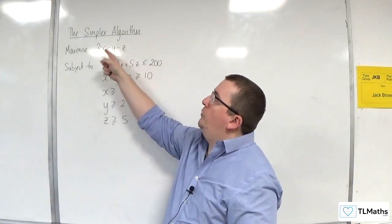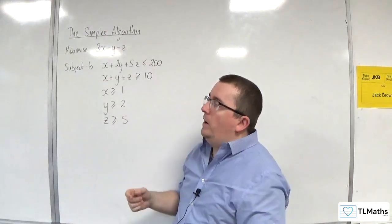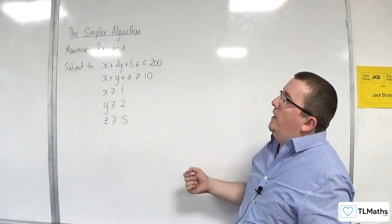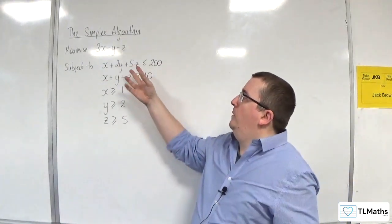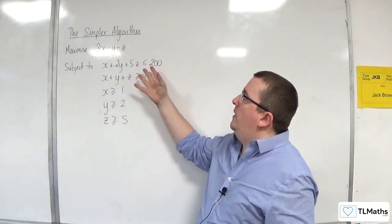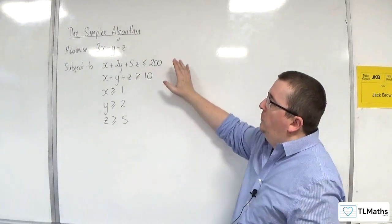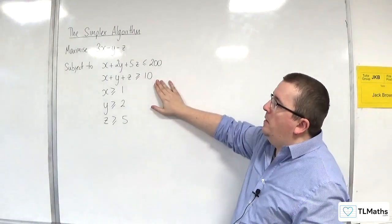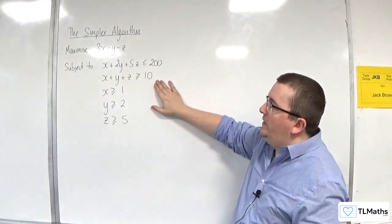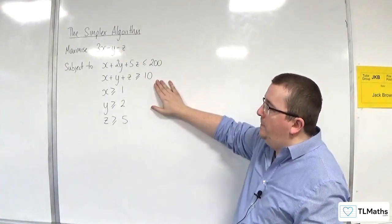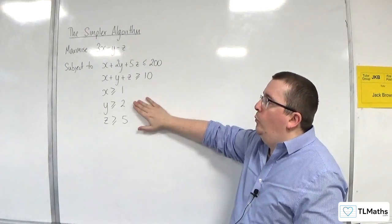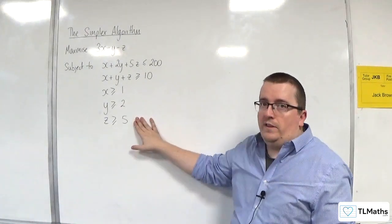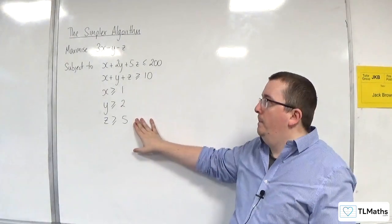We're going to maximise 3x take away y take away z, subject to: x plus 2y plus 5z is less than or equal to 200; x plus y plus z is greater than or equal to 10; x is greater than or equal to 1; y is greater than or equal to 2; z is greater than or equal to 5.